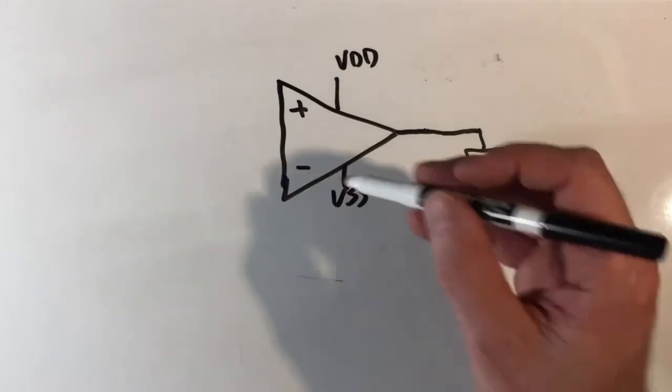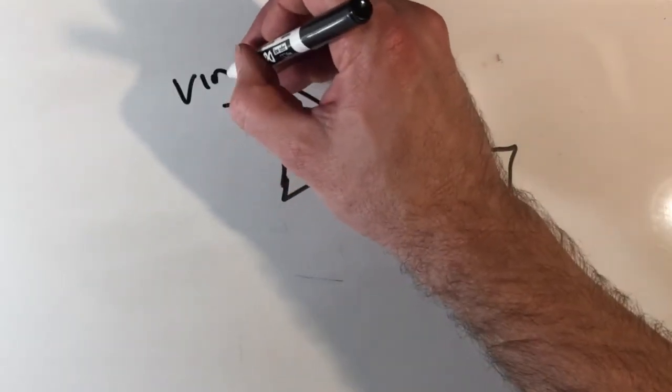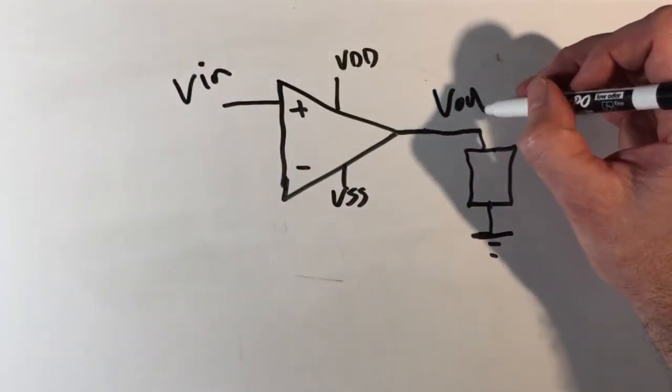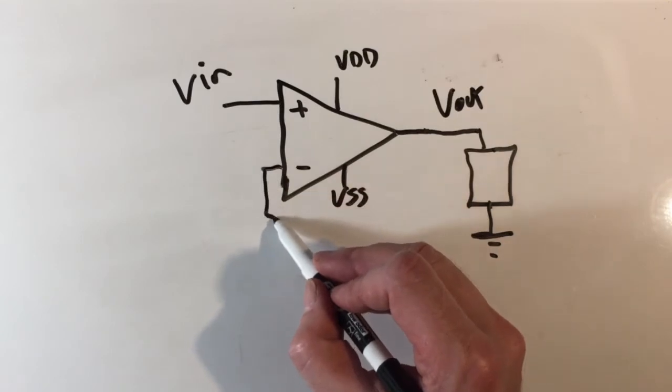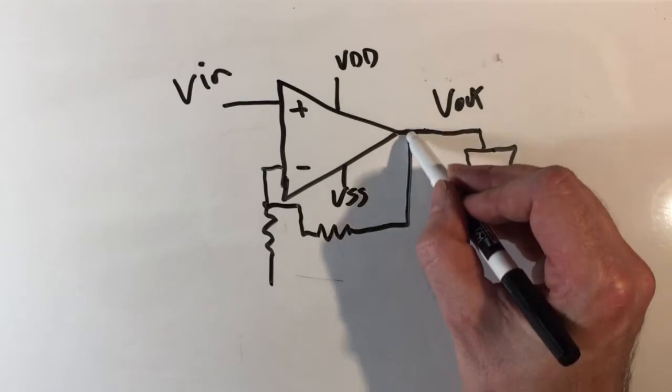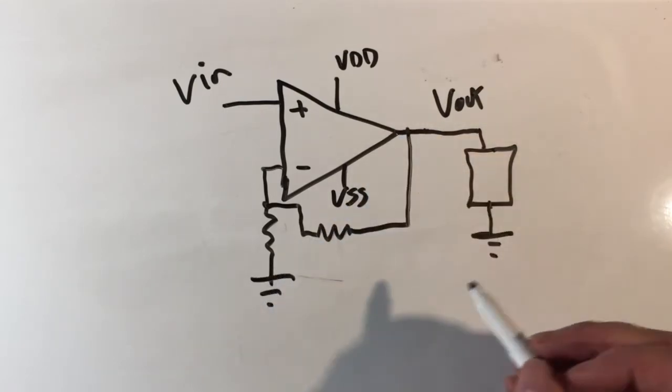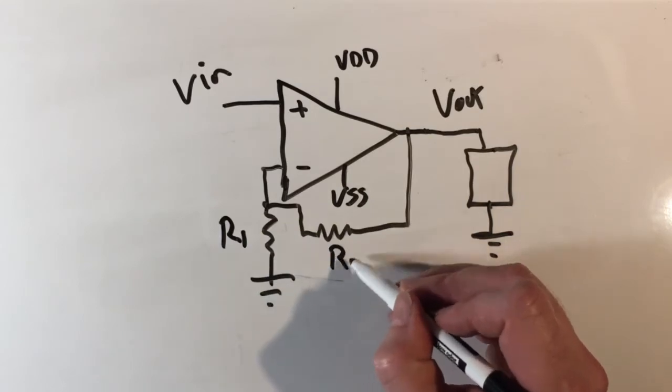You saw the equations for a non-inverting amplifier. Just draw it. We have V in, V out appears across this wire, and then we have two resistors. This is going to ground in this example. We'll call this one R1 and this one R2.